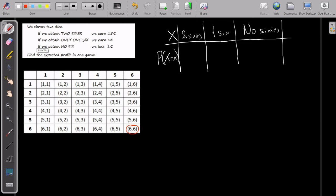So, the probability of bringing two sixes is one out of, totally, thirty-six.